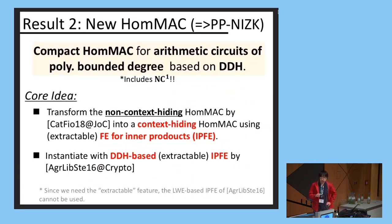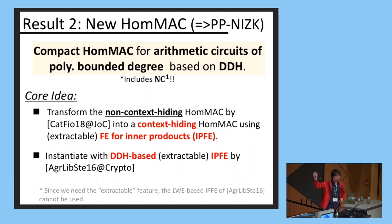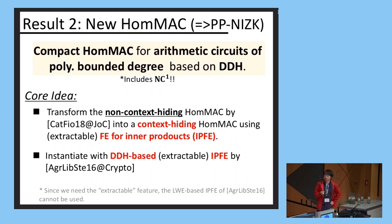This is our second result: we construct a new homomorphic MAC, which results in a preprocessing NIZK. We construct a compact homomorphic MAC for arithmetic circuits of polynomially bounded degree based on the DDH assumption — a very weak assumption — and this includes NC1 circuits. The core idea is that we transform the information-theoretically secure, non-context-hiding homomorphic MAC by Catalano and Fiore into a context-hiding homomorphic MAC using a special extractable functional encryption scheme for inner products (IPFE). By instantiating this IPFE based on the DDH-based construction of Agrawal, Libert, and Stehlé from 2016, we get our context-hiding homomorphic MAC from the DDH assumption.